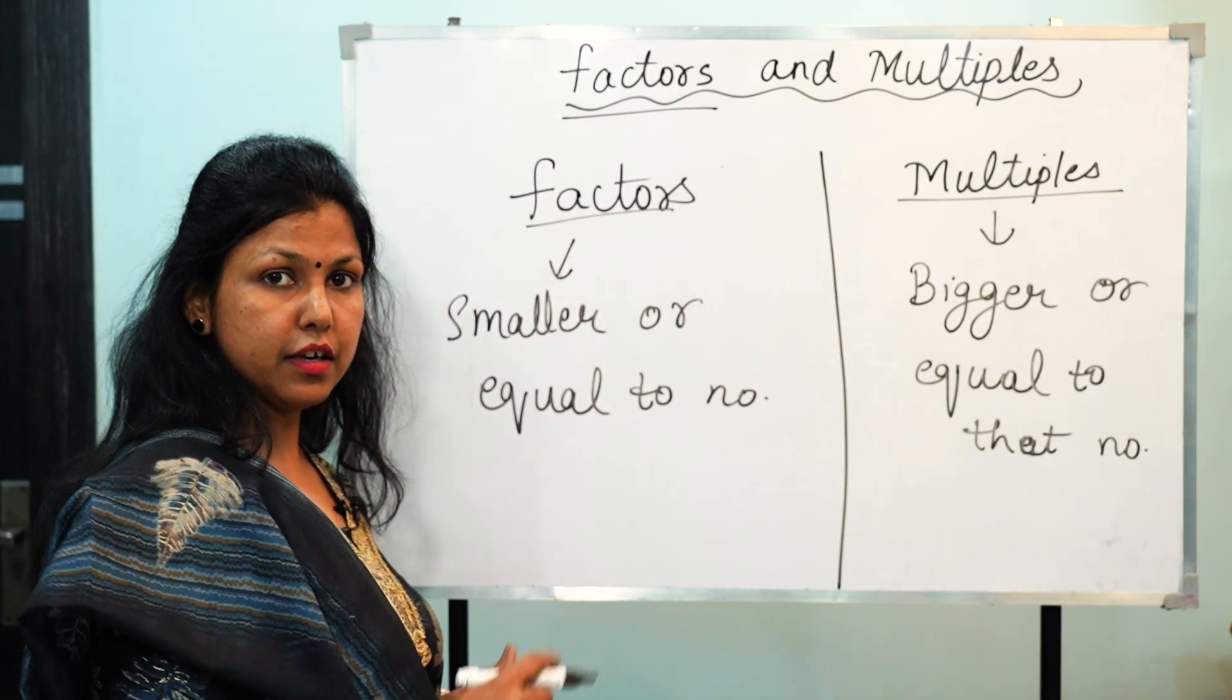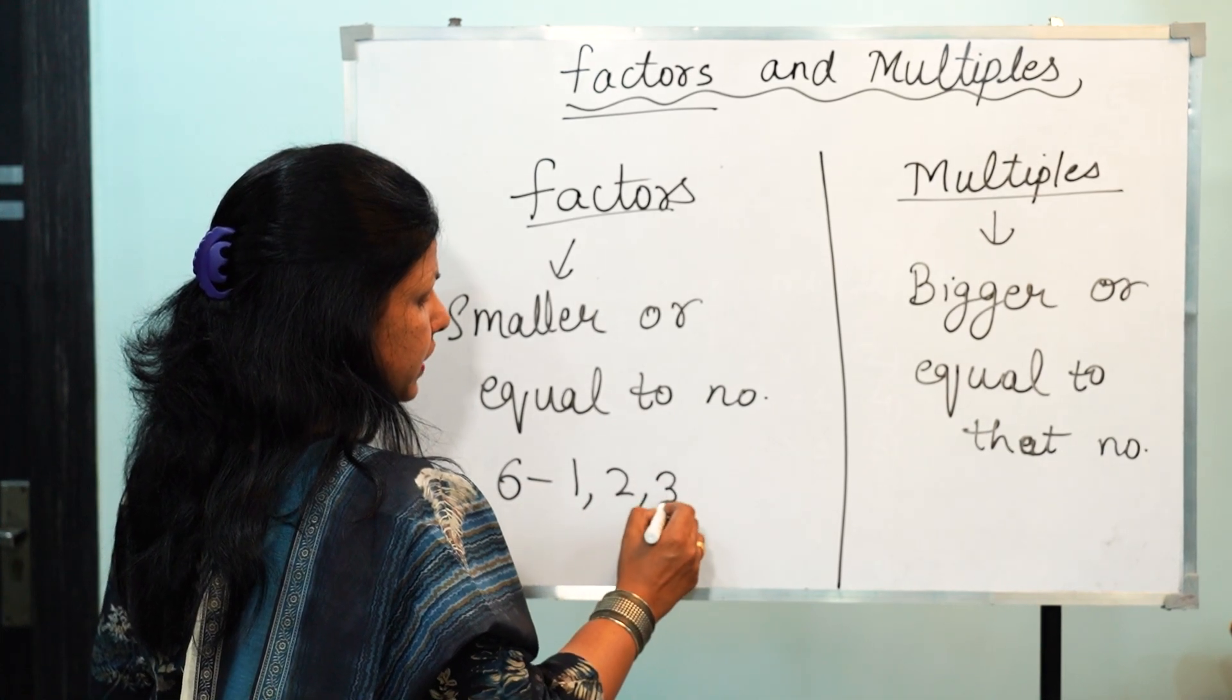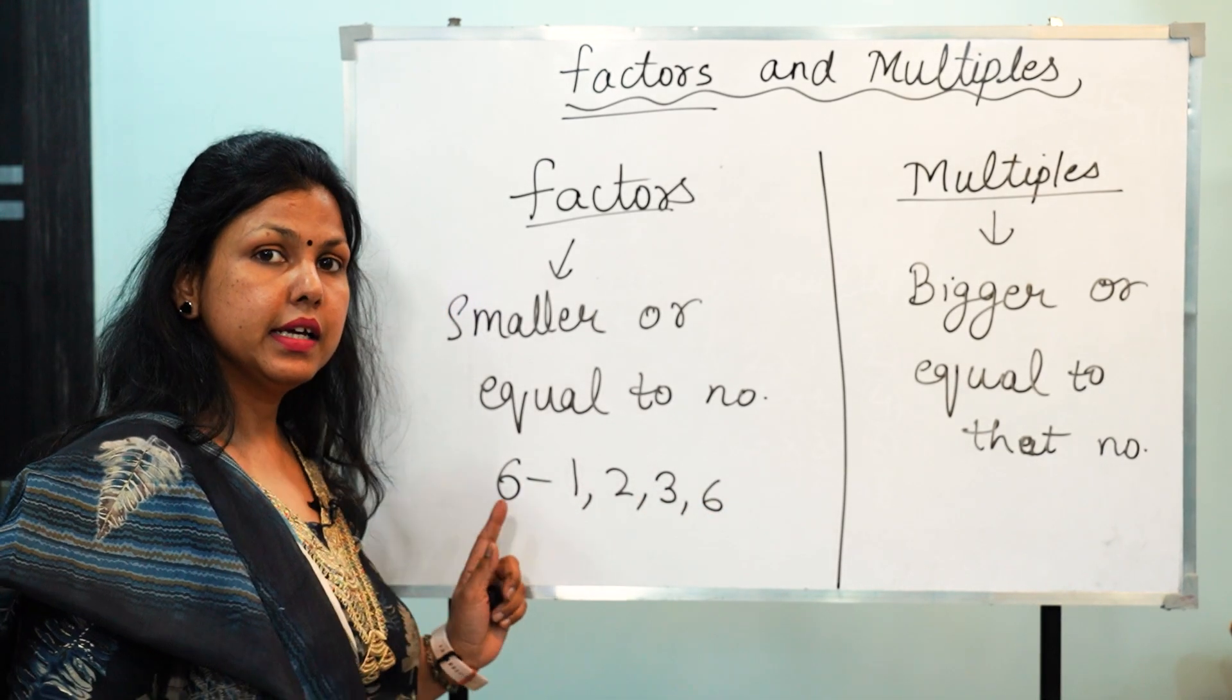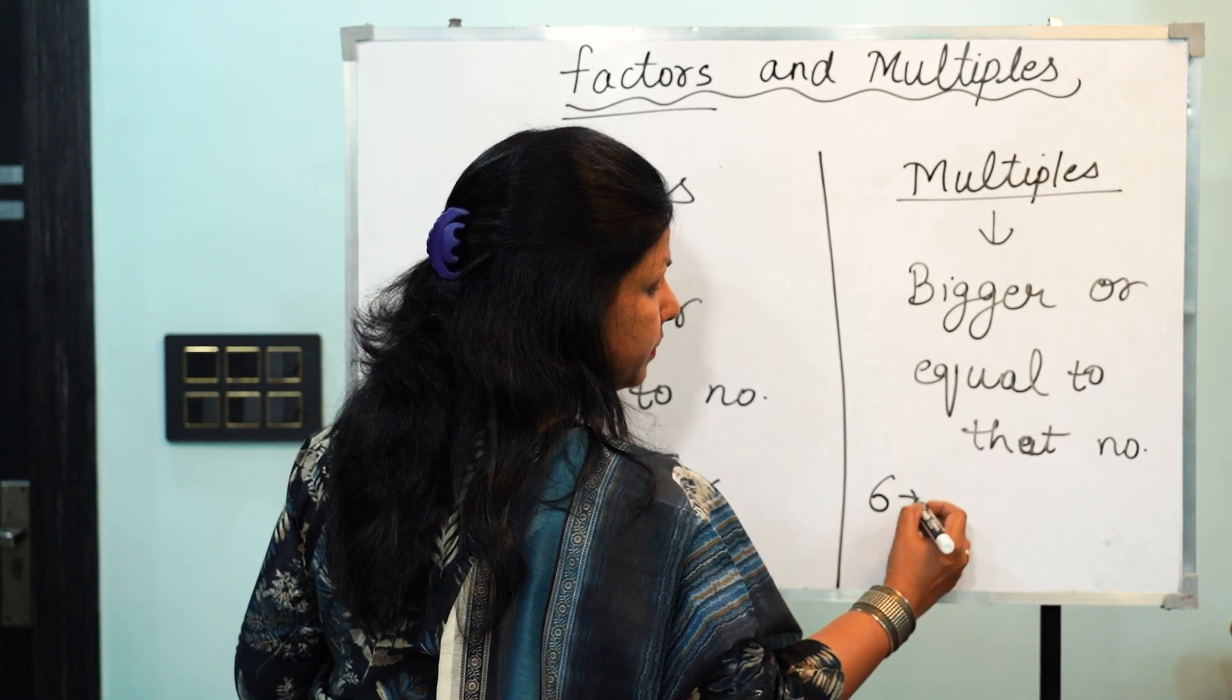So suppose we have learned about 6. The factors of 6 are 1, 2, 3 and 6. You can see, the factors of 6 are small or equal to 6.